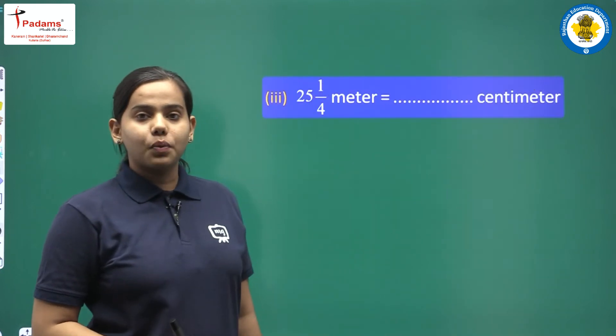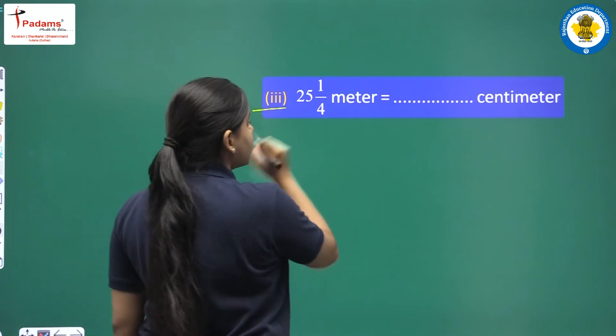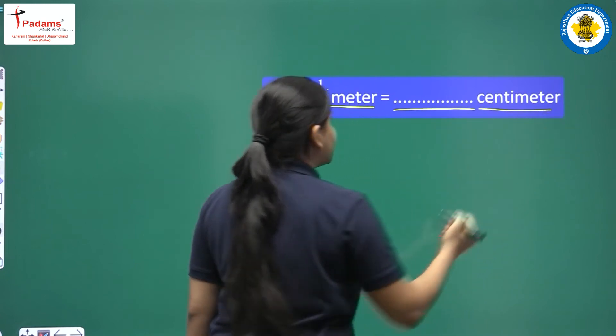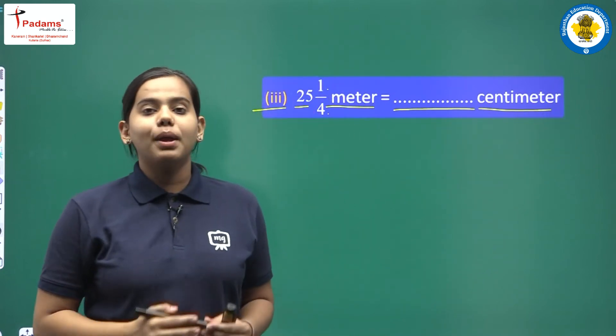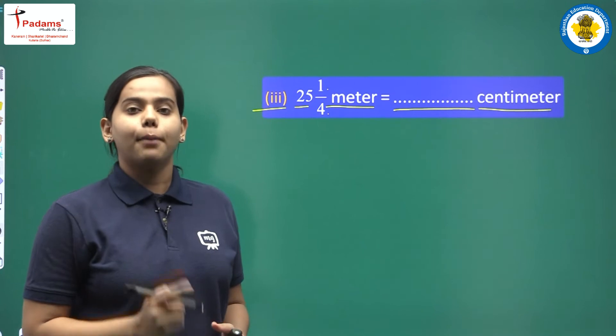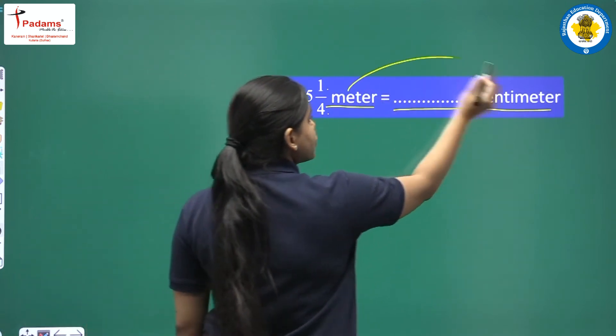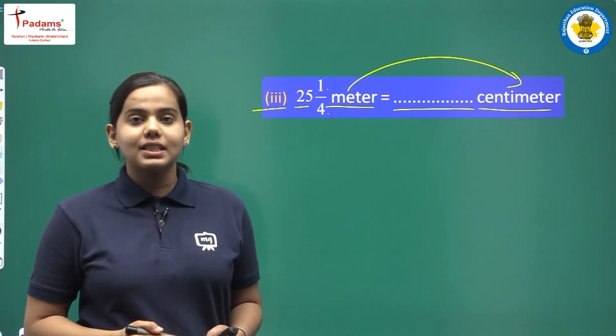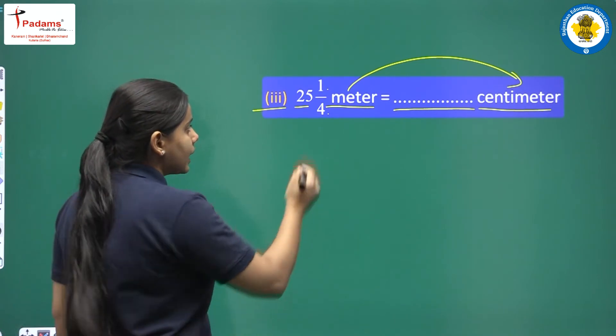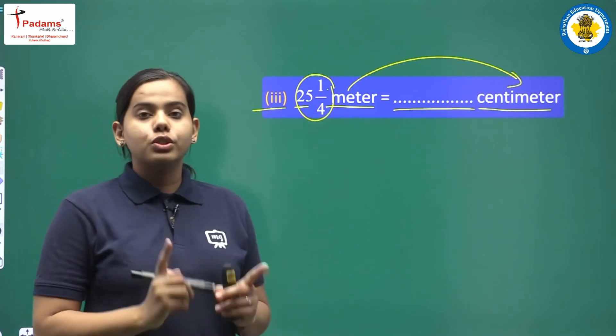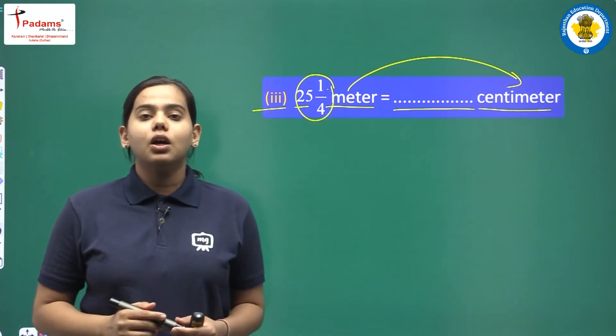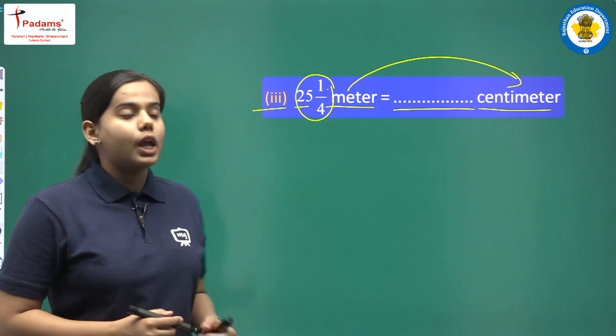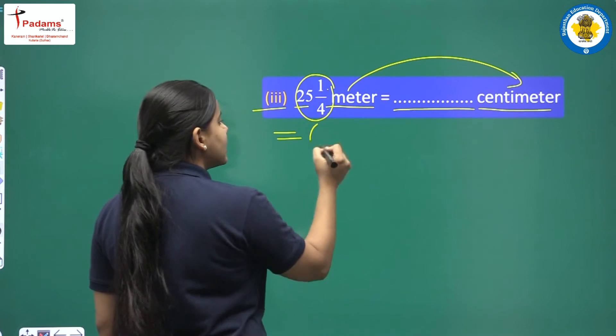Let's move on to the third question. This is the third question. 25 whole 1 upon 4 meter equals dash centimeters. But the units are different here. We have to change meters. And meters are given to us in mixed fractions, 25 whole 1 upon 4. So always remember, whenever in the question mixed fraction is given, we have to change it into improper fraction. How will we do? We just learned.